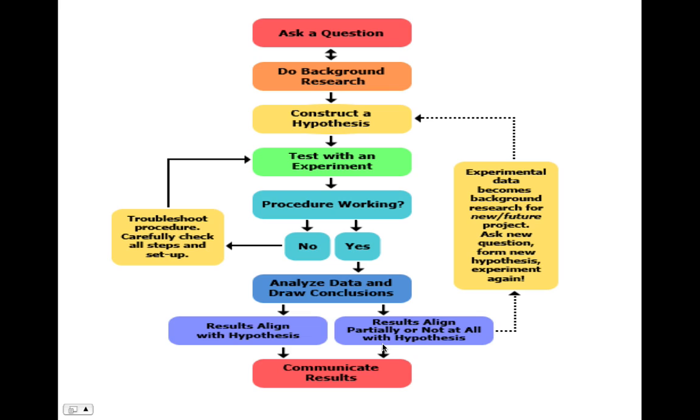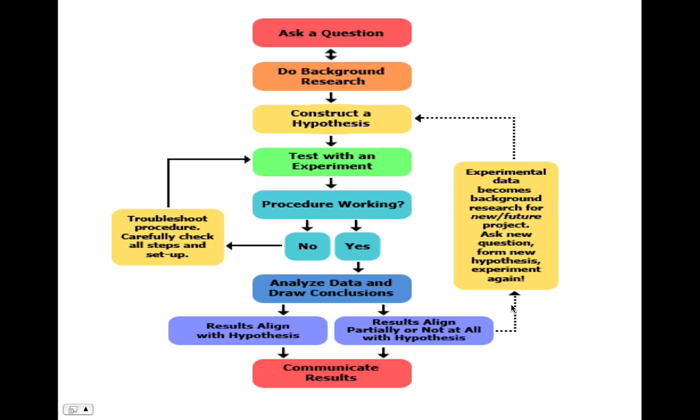Now the scientific method has variables, and these variables are called the independent variable, the dependent variable, and also control variables. The independent variable is an item that you change. I like to remember it as what I change—it's what you would change in the experiment. There is only one IV in an experiment that is a good solid experiment.